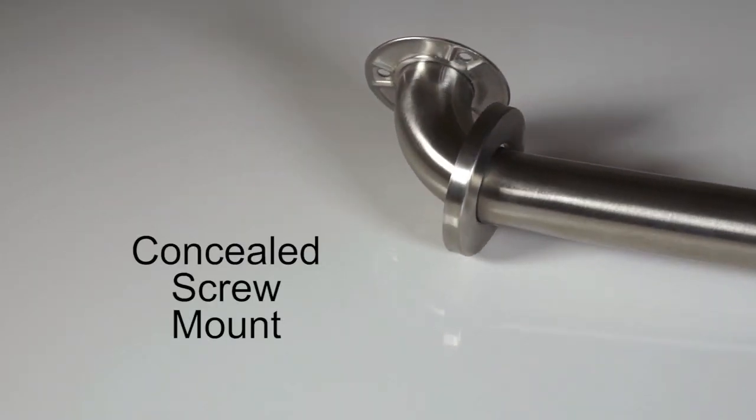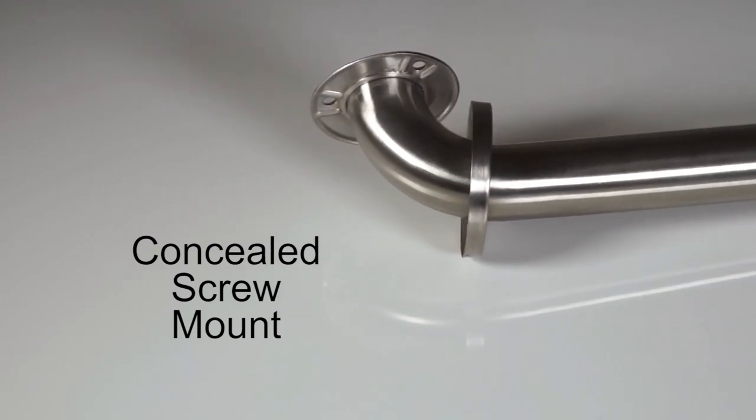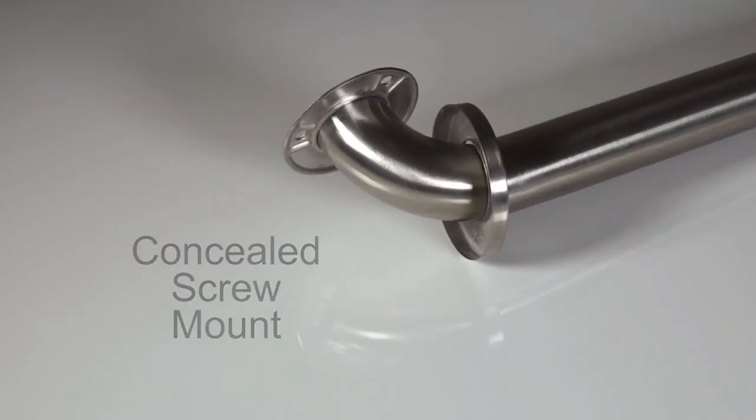Stainless steel grab bars with concealed screw mounts neatly hide the installation screws with a round stainless steel cover that matches the grab bar finish.